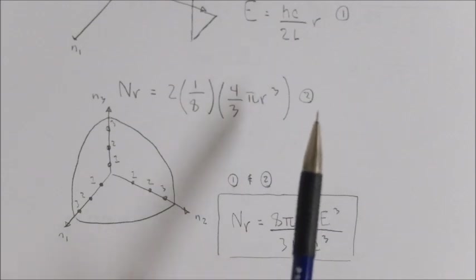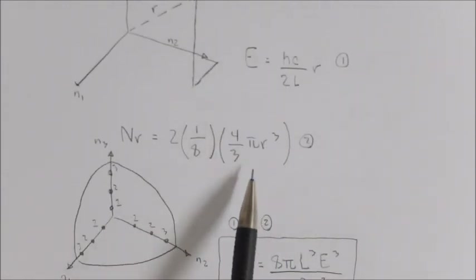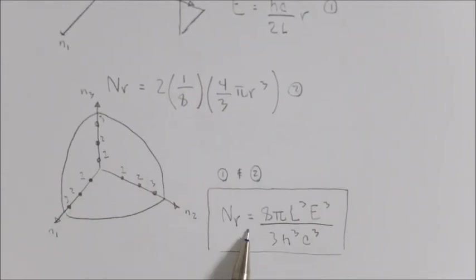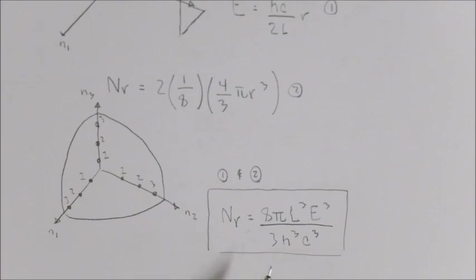So by combining equation 1 here and equation 2, we can come up with this equation right here, which talks about the number of allowed energy states but is only defined in terms of the energy and the length as well as some constants.